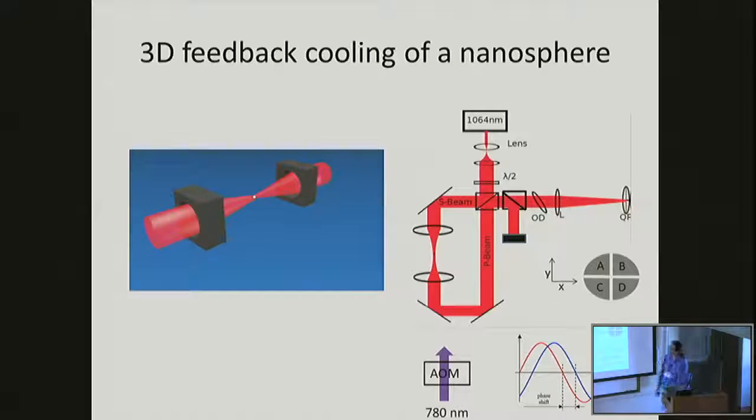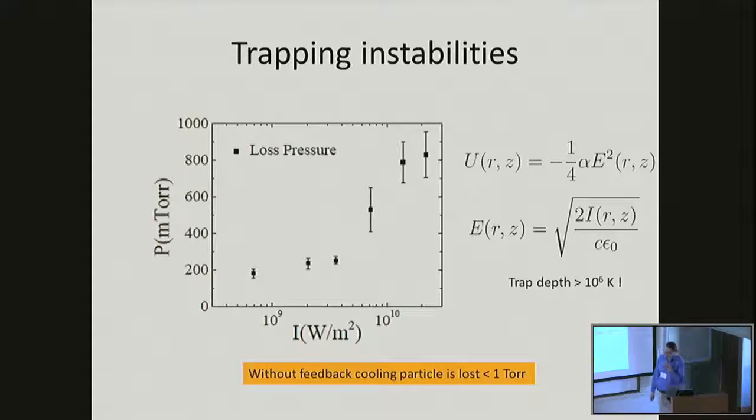Once the particle's in the potential, we have to do some laser cooling for the reasons I mentioned before. We image the motion of the scattered light from the particle onto a segmented quadrant photo detector. We take that signal, and then we phase shift it to get something that's proportional to the velocity of the particle and feed that back to some acousto-optic modulators to put forces on the thing to cool it down. That's happening in three directions as shown.